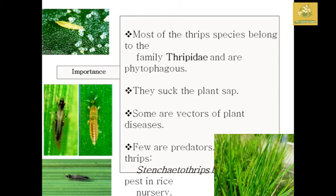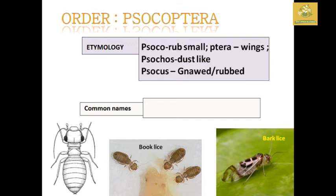Next, we are going to see about the order Psocoptera. Regarding the etymology of this name, 'Psoco' means to rub or gnaw, and 'ptera' means wings. They can also be classified based on 'psoco' meaning dust-like or rubbed. Their common names are booklice, bark lice, and bark flies. From the name of this order, we can understand that they are minute insects.